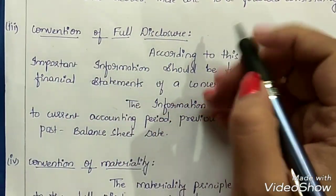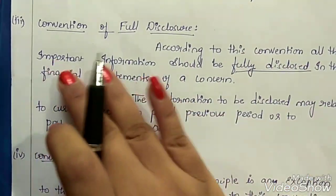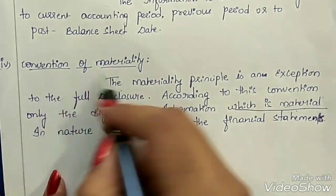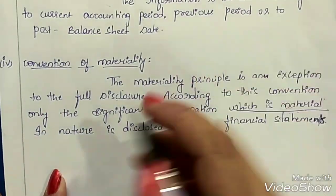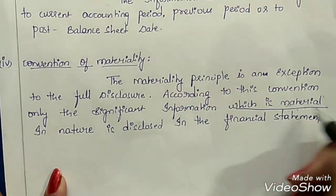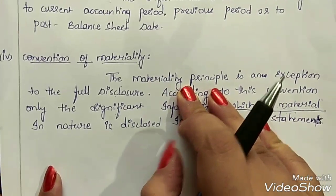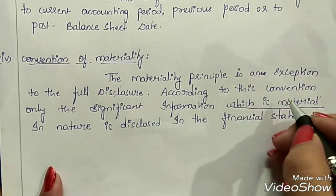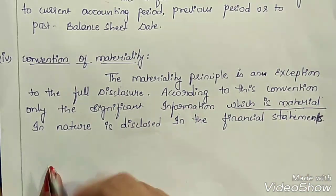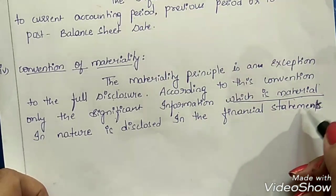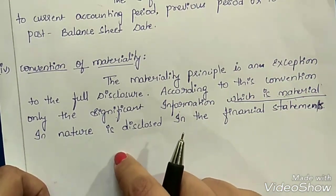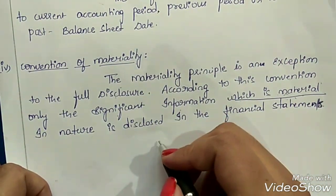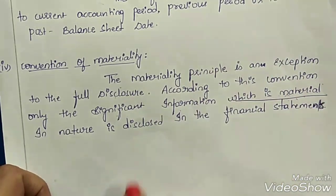As per the convention of full disclosure, information which is important should be fully disclosed in the financial statements. Whereas the convention of materiality says that only information which is significant or material in nature has to be disclosed. Any information which has an impact on the decision of shareholders, investors, or any other users of information is treated as material information.